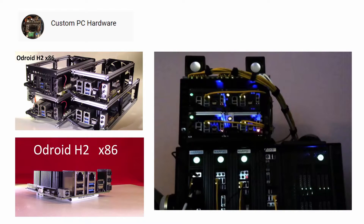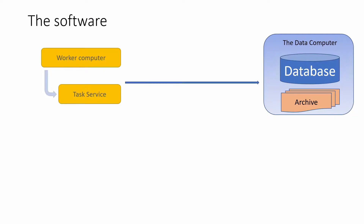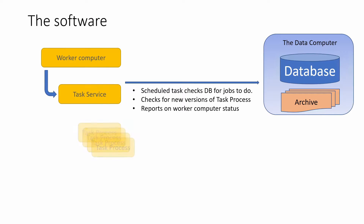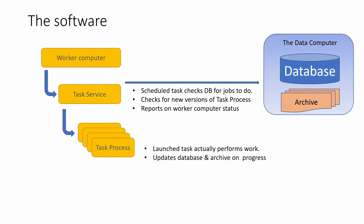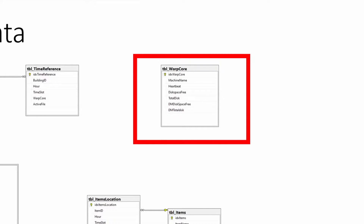Today we are going to continue developing the software for this system. On each of the worker computers there are going to be two software processes: the task service and the task process. What we are looking at today is the task service and storing information in the SQL Server database. This will be the area of the database we are interested in today — the warp core table.